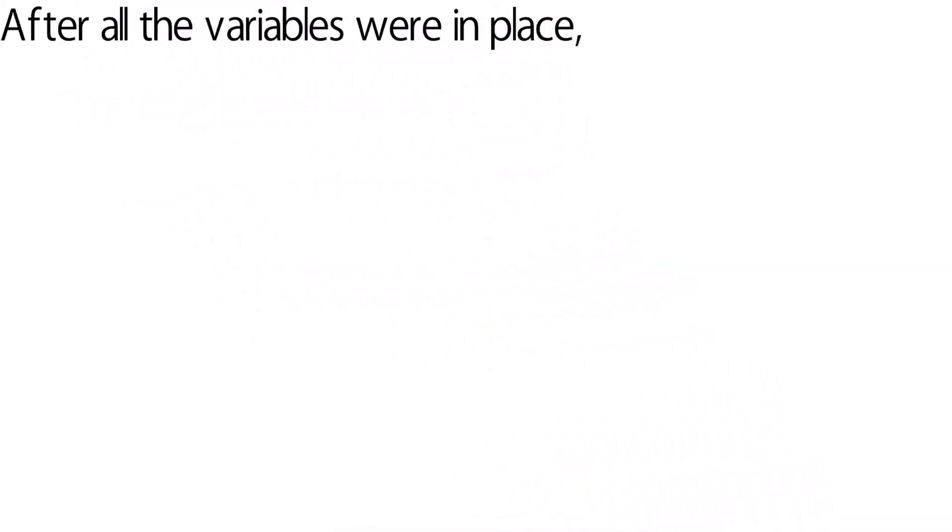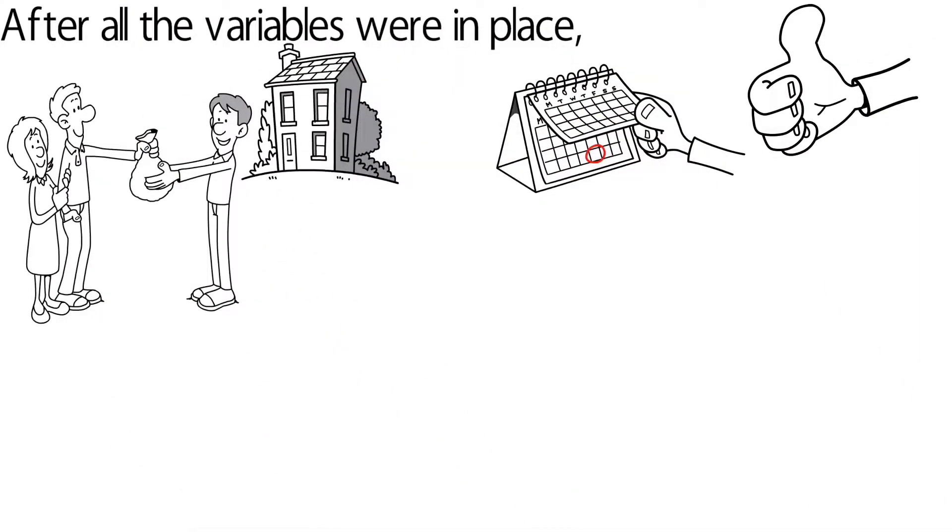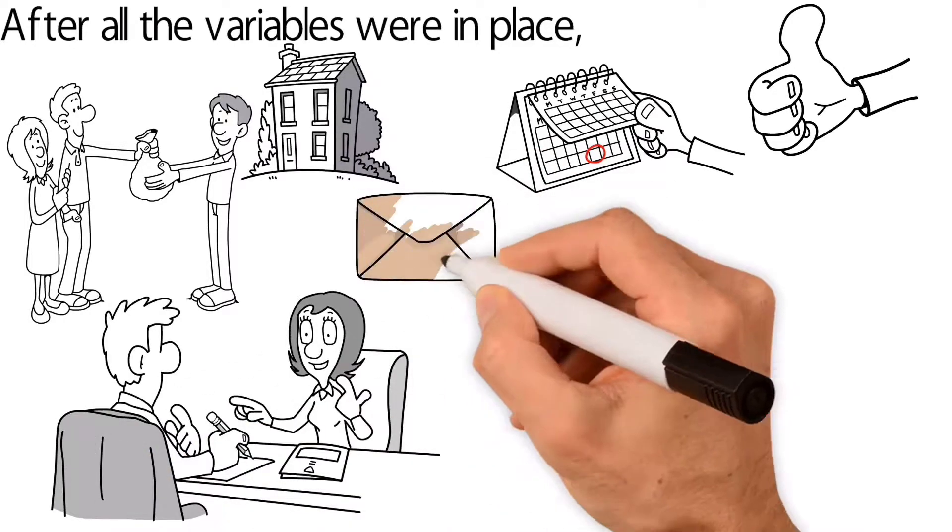After all the variables were in place, Joe and Lisa saw the time was perfect to purchase their first new home. Joe got in touch with Hermione and let her know what Hans had told them, and sent their qualifications letter from Hans over to Hermione.